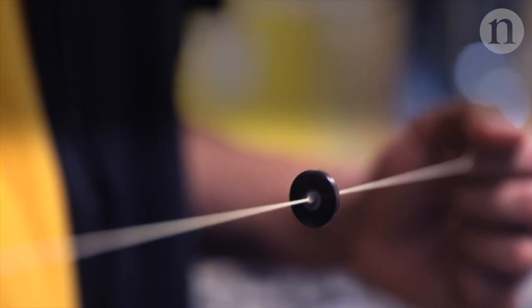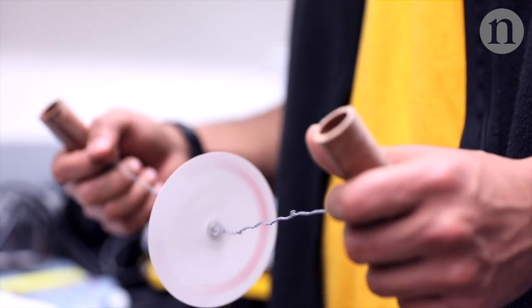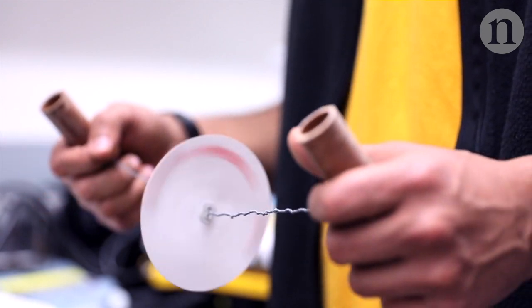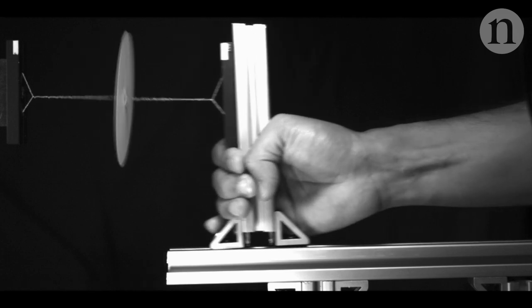Now scientists at Stanford have been inspired by a simple children's toy that can be made out of a button or a disk of paper. They studied the mechanics of the toy to work out how to achieve the fastest possible spin.